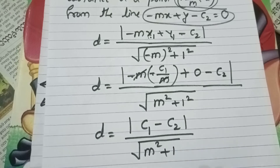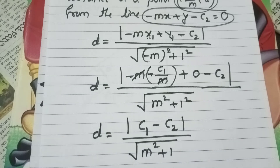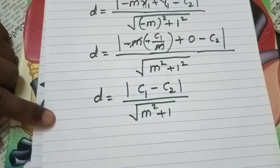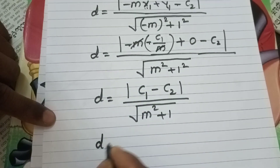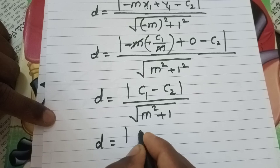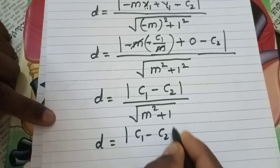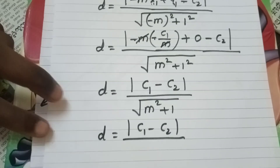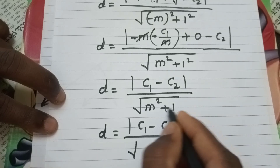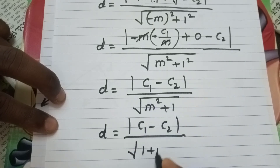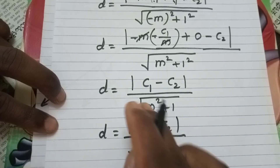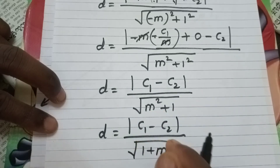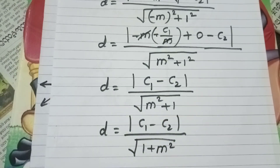This is the formula for the distance between two parallel lines. We can write it as D = |c1 - c2| / √(1 + m²). This is the final result for the distance between two parallel lines y = mx + c1 and y = mx + c2.